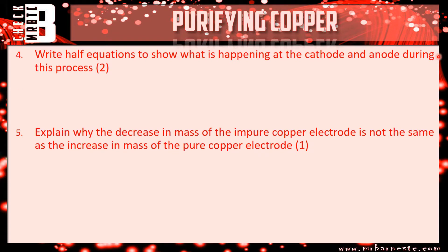Right, on to question four. Write half equations to show what's happening at the cathode and the anode during this process. So if we start off at the anode, that's where the copper atoms turn into copper ions. So we start off with Cu and end up with Cu2+ plus 2e- for one mark. The cathode is the exact opposite. So you have your Cu2+ plus 2e- goes to your copper atom.